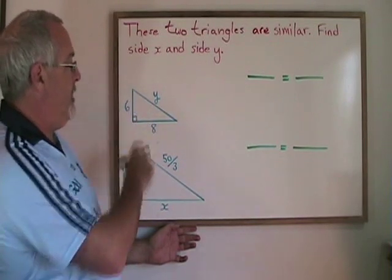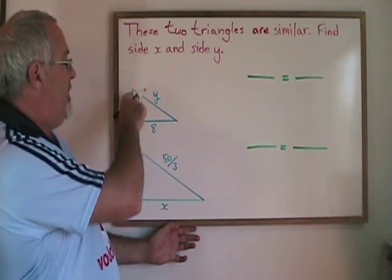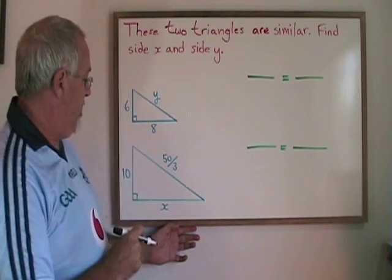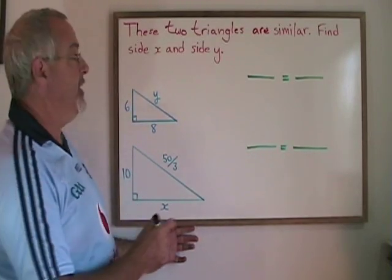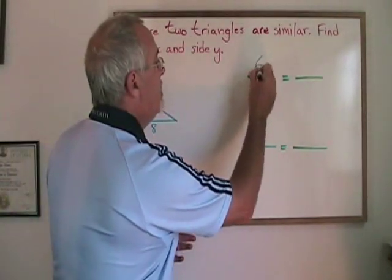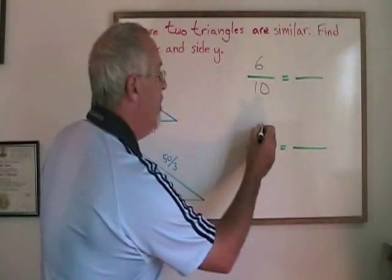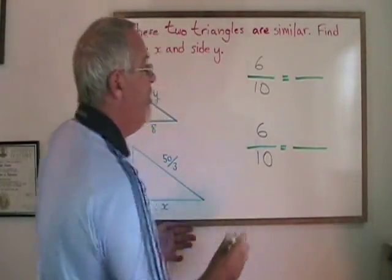The shortest side in each of these two triangles is the upright. In the smaller it is 6 units long and in the lower one it is 10 units long, so therefore I can make 6 over 10 my ratio of similarity for these two triangles. I will use that in both of my proportions.